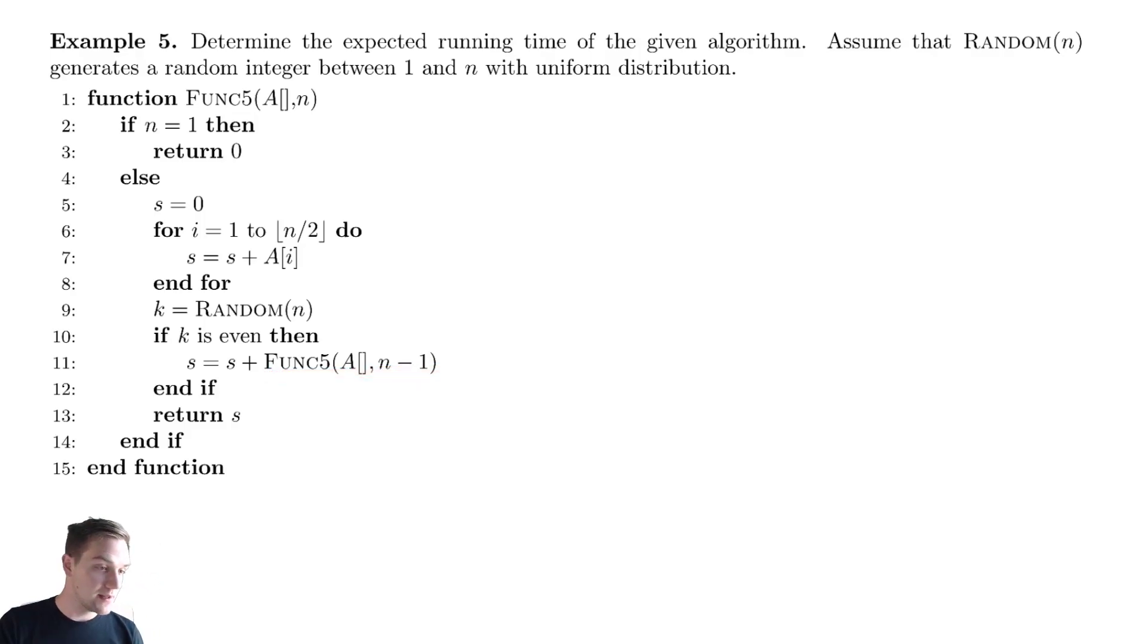and it has a recursive call appearing down here. And there is randomness in this because we are defining a random number, and then if that number is even, we will perform that recursive call. So this is mimicking the idea that some of the time we might need to make recursive calls and other times we might not need to.